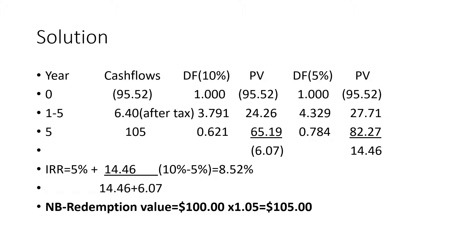Years one to five: interest is $8 less tax at 20% = $6.40. The annuity factor for years one to five at 10% is 3.791, giving a present value of 24.26. Year five: redemption value is $105 (100 plus 5% premium). Discount factor for year five at 10% is 0.621, giving a present value of 65.19. Total NPV: 65.19 + 24.26 − 95.52 = negative NPV of 6.07.